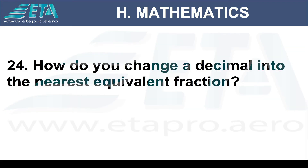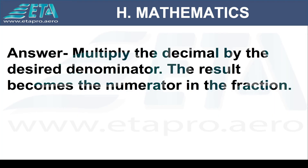How do you change a decimal into the nearest equivalent fraction? Multiply the decimal by the desired denominator; the result becomes the numerator in the fraction.